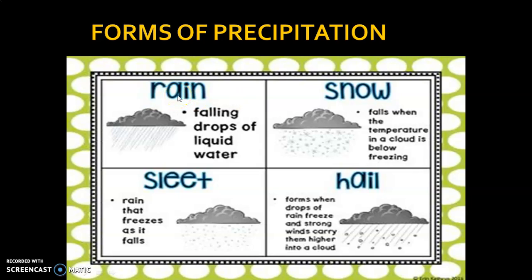Rain is the most important and most common form of precipitation. The warm and moist air mass, after being uplifted, becomes saturated and clouds are formed. When clouds become heavy, the water falls on the earth's surface. When water falls on the earth's surface in liquid state, that is rain.